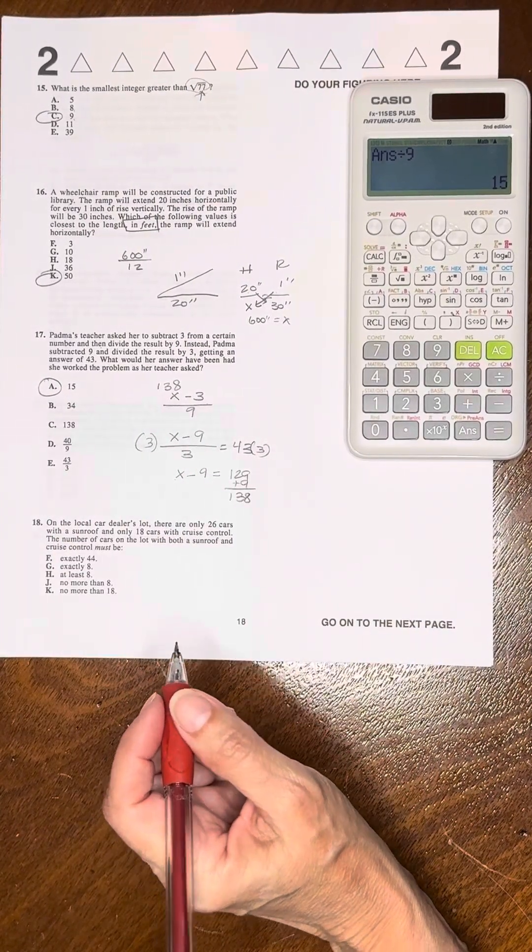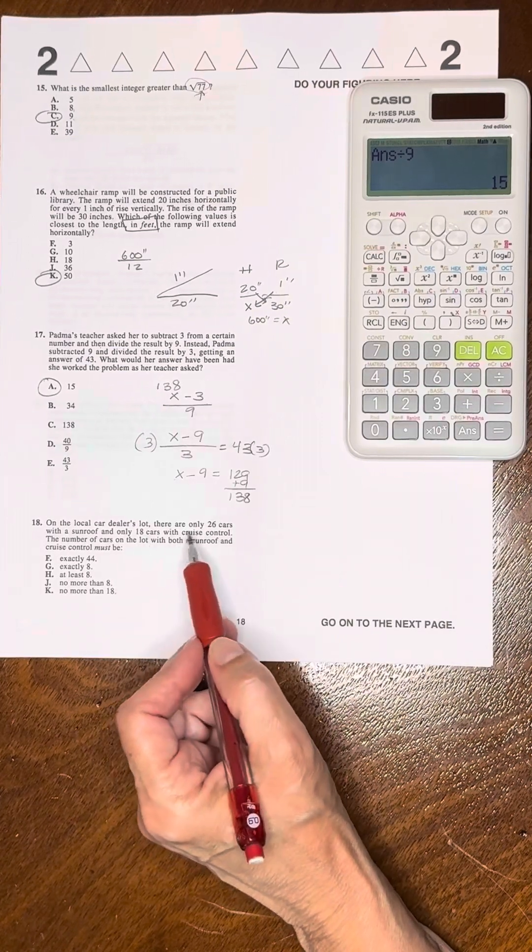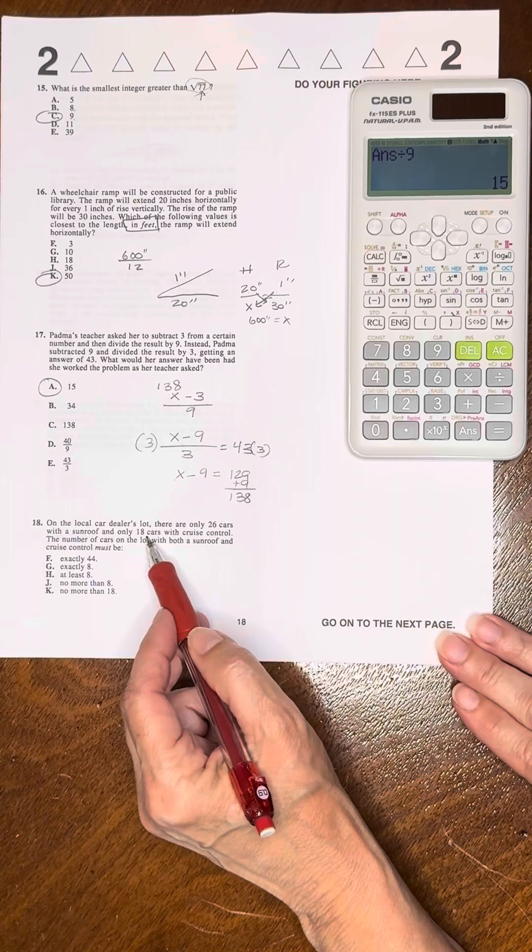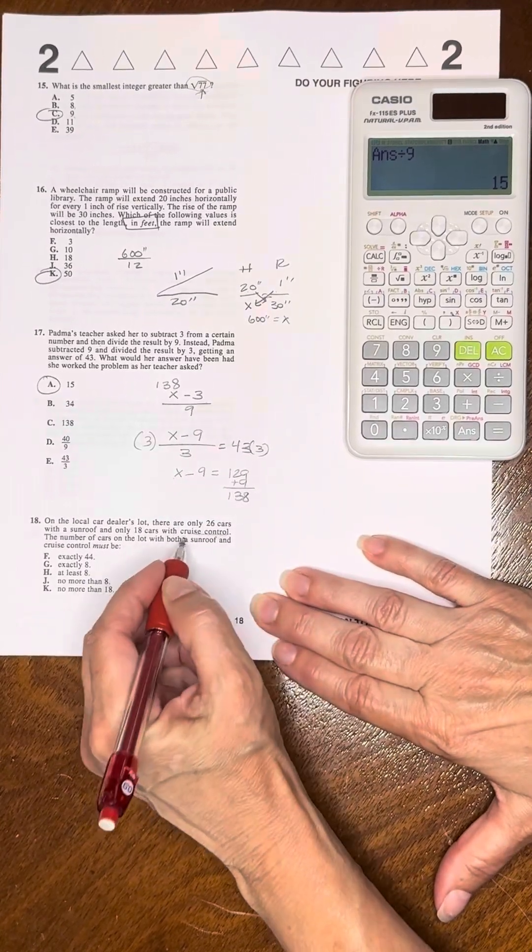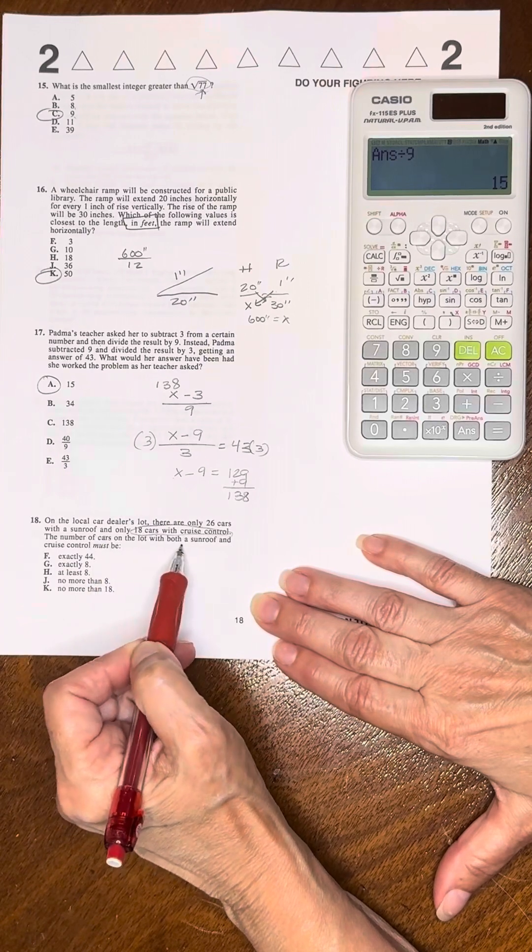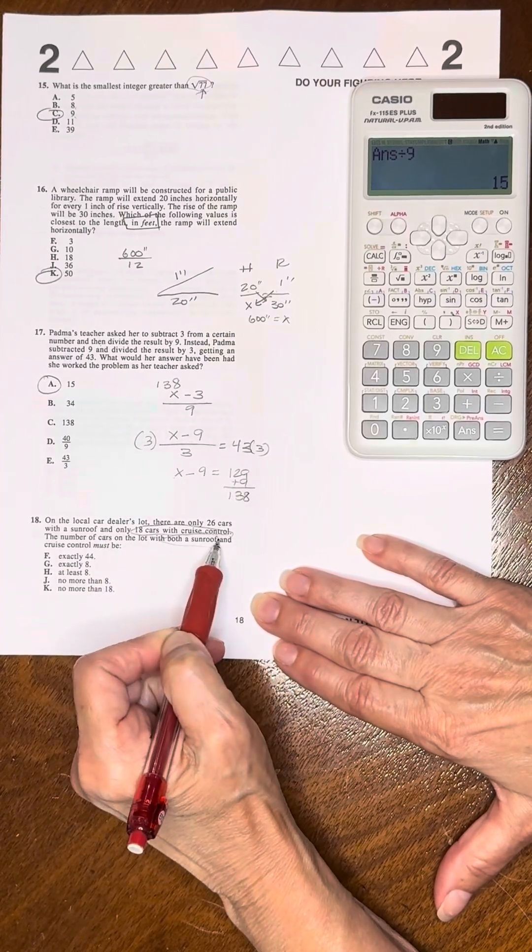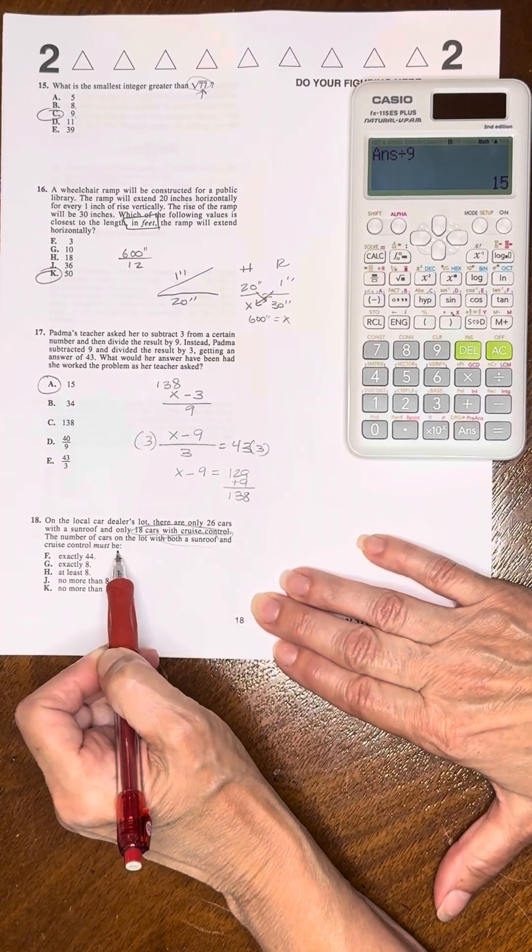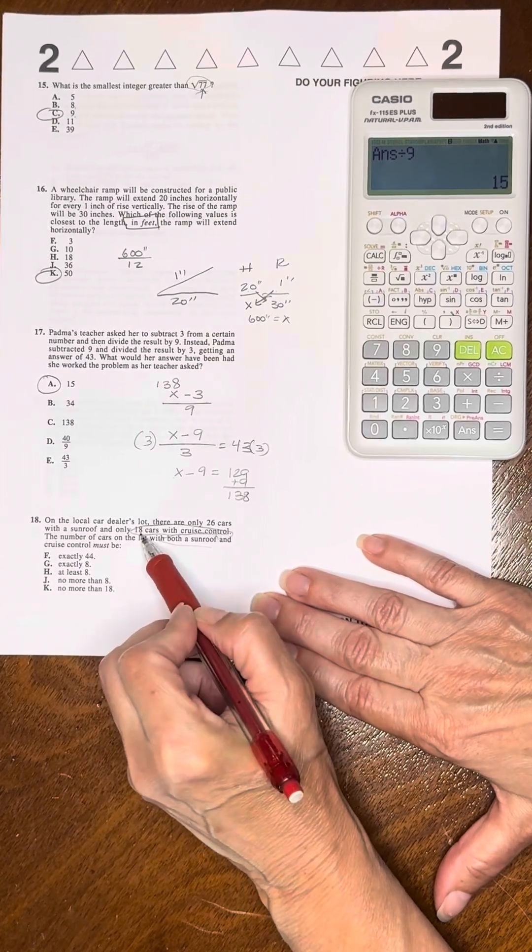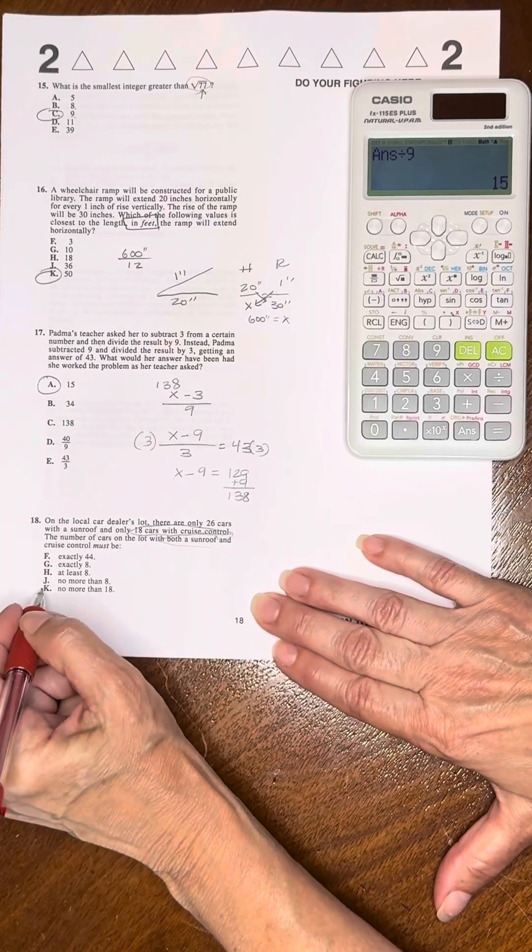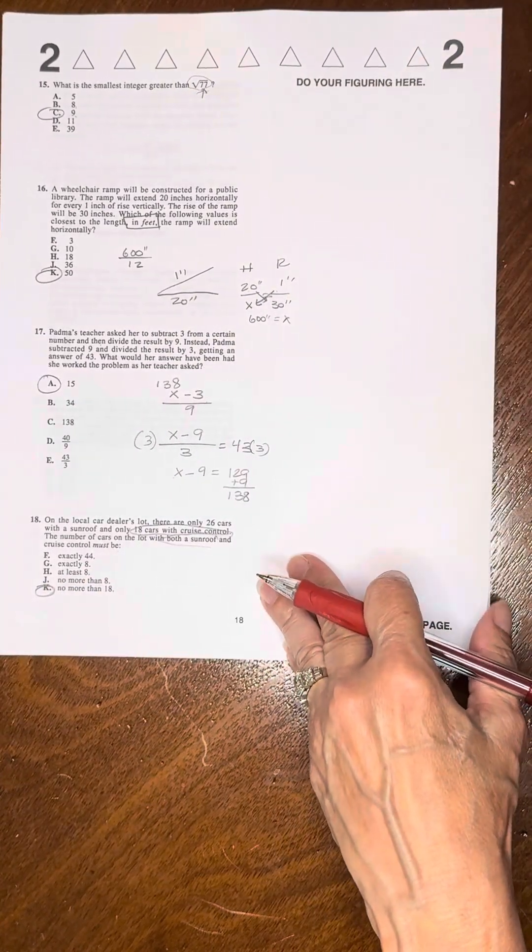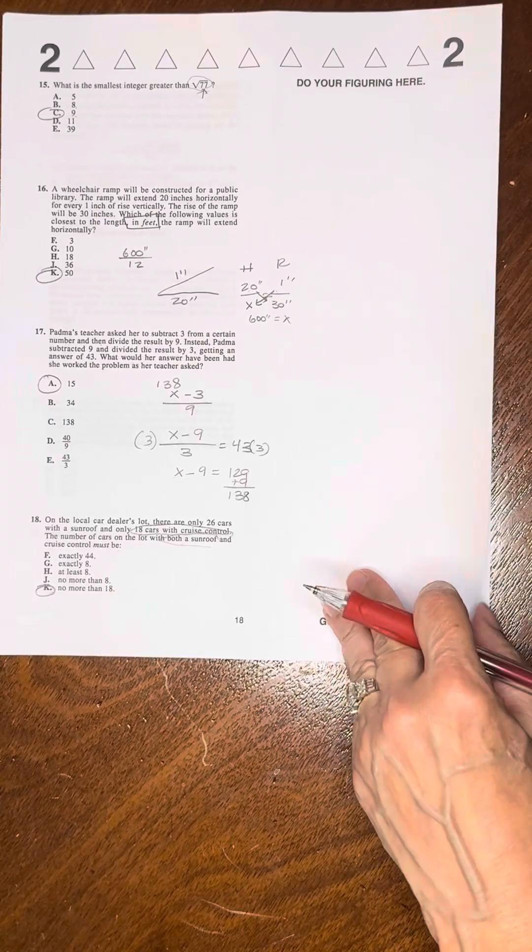Number 18: On the local car dealer's lot, there are only 26 cars with a sunroof and 18 cars with cruise control. The number of cars with both must be 18 or less, right? No more than 18 because 18 of them have cruise control. K is the answer.